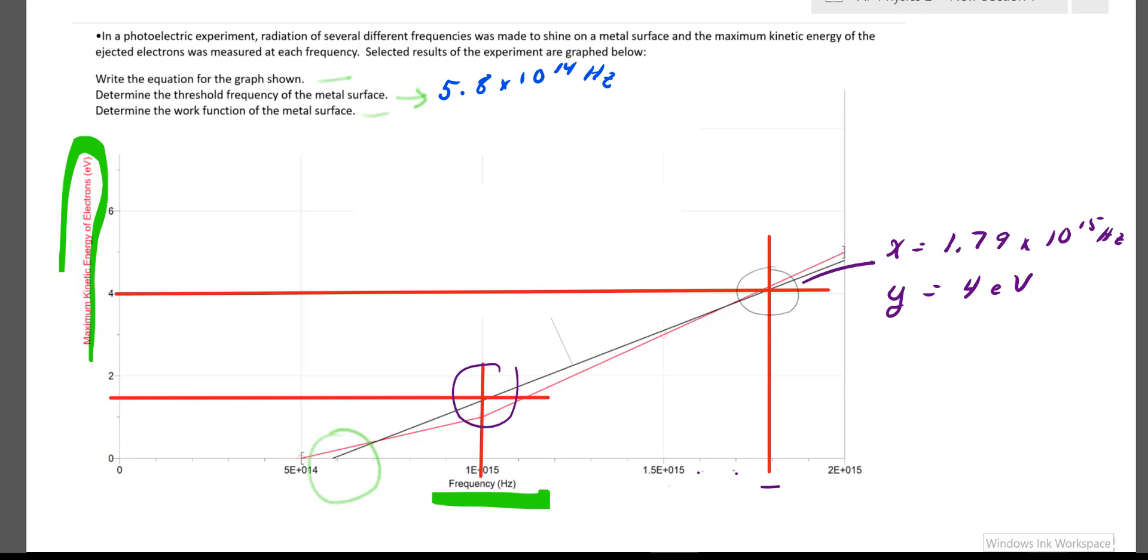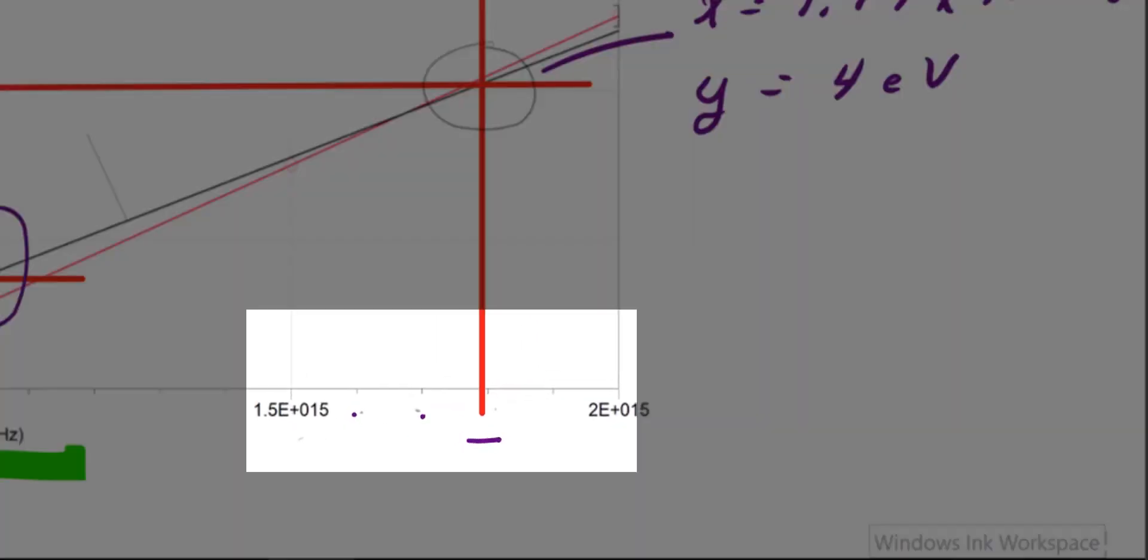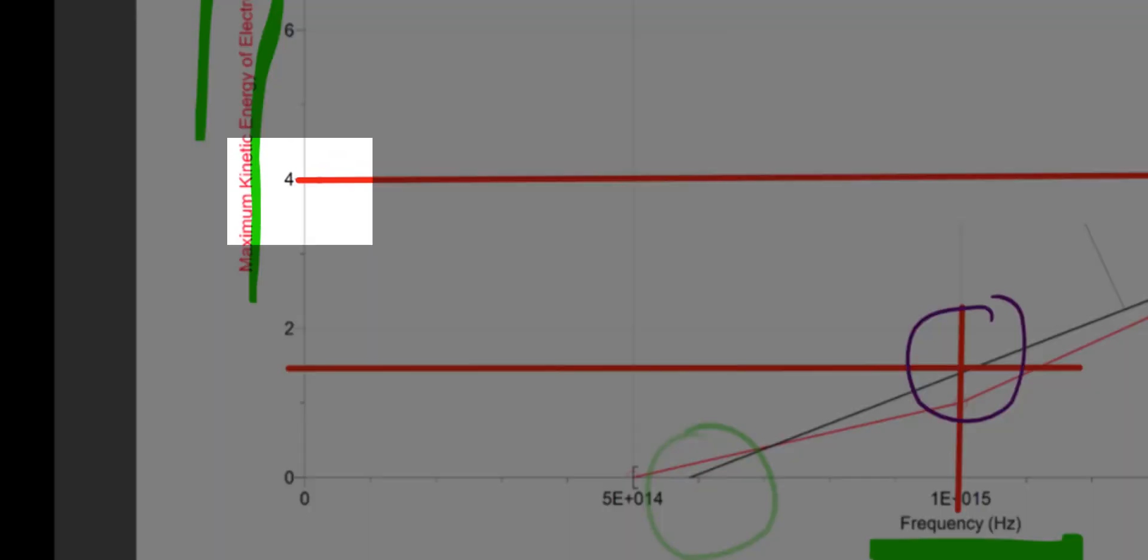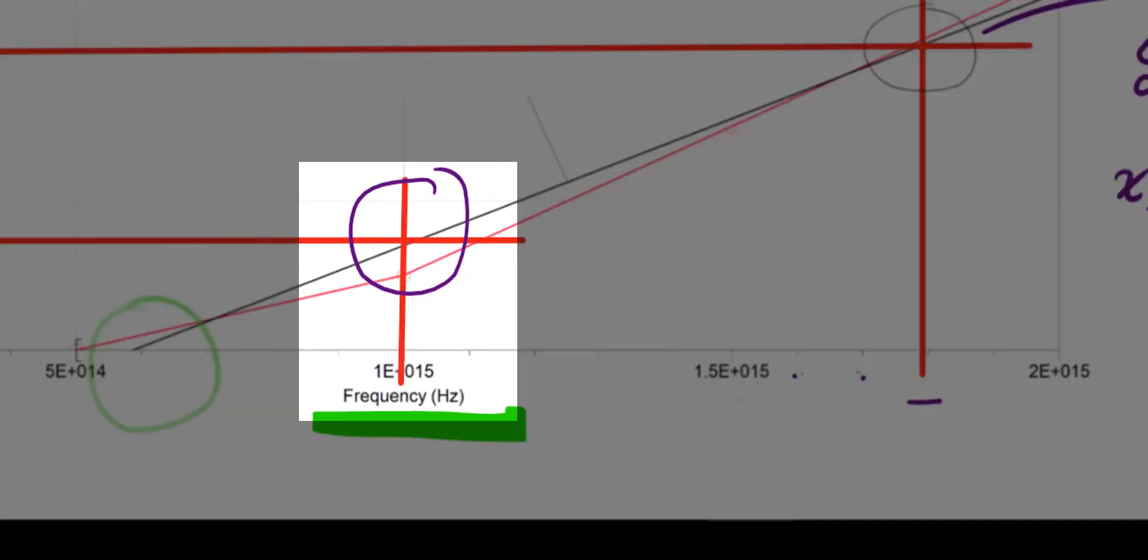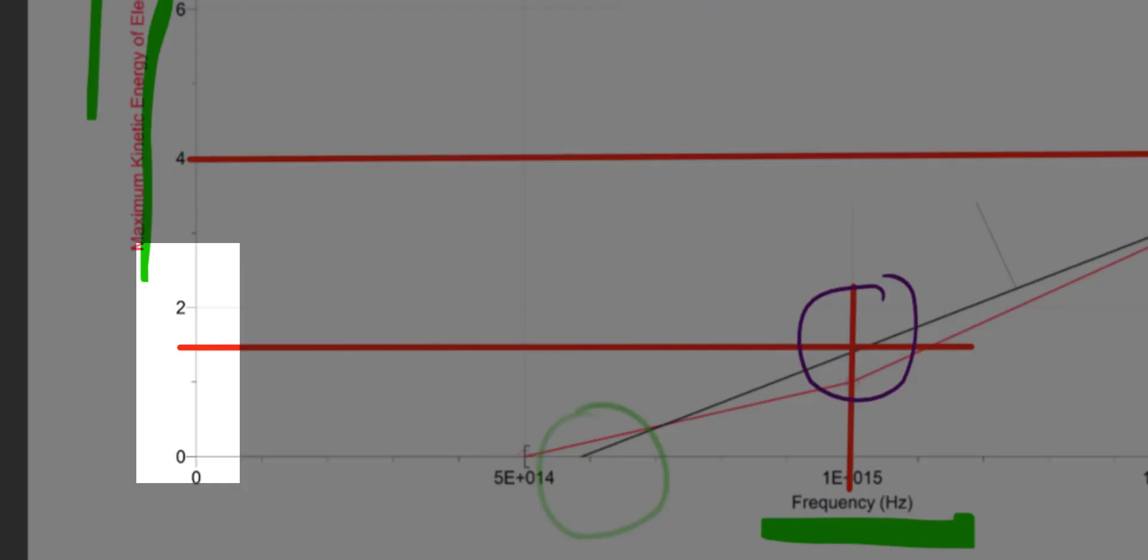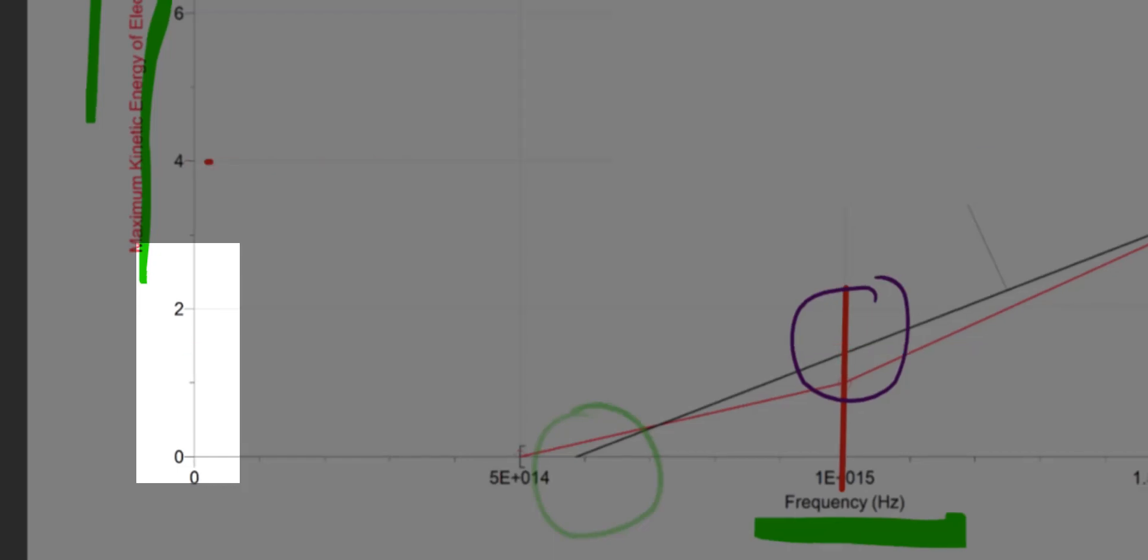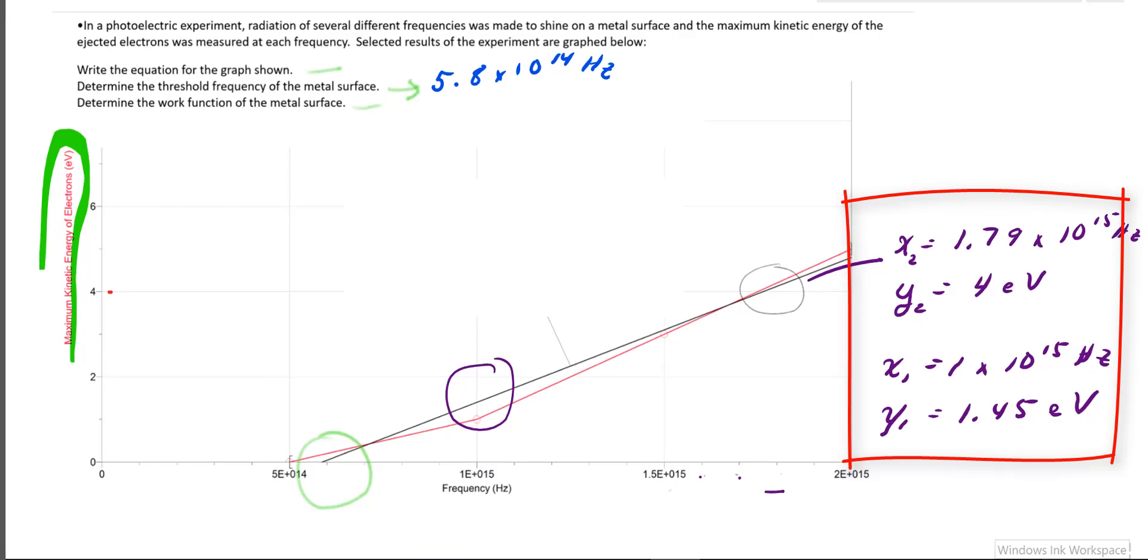So reading where those red lines cross the axis for my second data point, x2 is equal to 1.79 times 10 to the 15 Hertz, y2 is 4 electron volts. My first data point, x1 is 1 times 10 to the 15 Hertz, and y1 is equal to 1.45 electron volts. So I've written down all the data, now I can use it to find the slope.